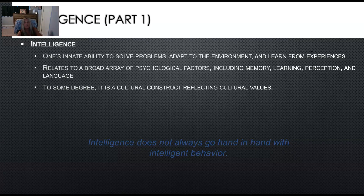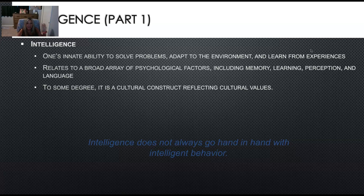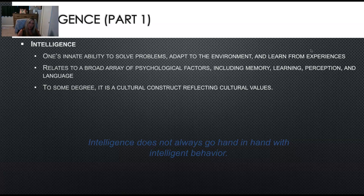Now moving into intelligence. It does not always go hand in hand with intelligent behavior. You can score great on an intelligence quotient test and it doesn't necessarily mean there's a strong correlation — and again, correlation does not mean causation. The textbook definition for psychology is one's innate ability to solve problems, adapt to the environment, and learn from experiences. So it doesn't mean how smart you are; it means how adaptable you are to your environment and how well you can learn from past experiences. To some degree, it is a cultural construct reflecting cultural values.